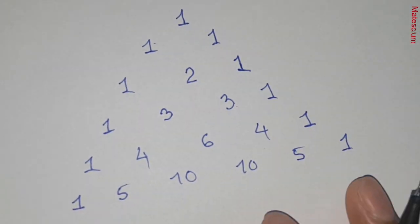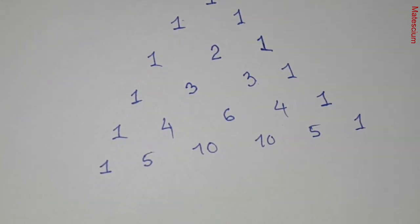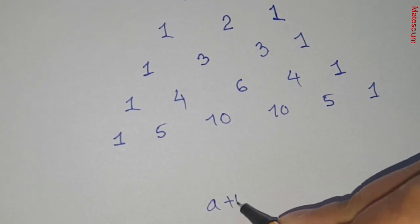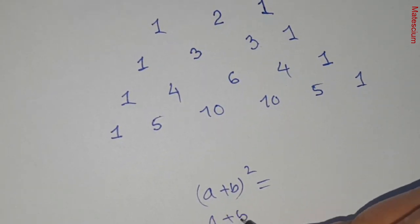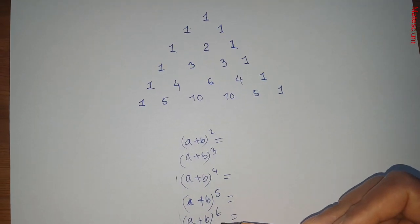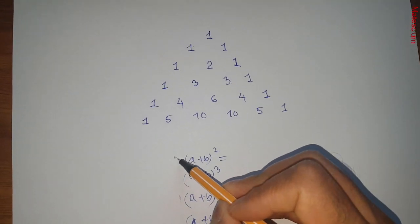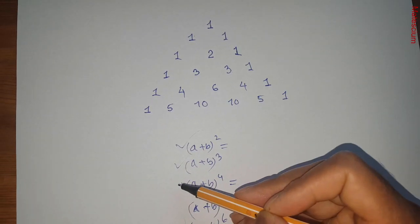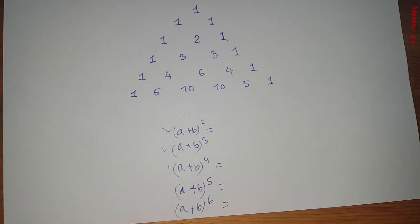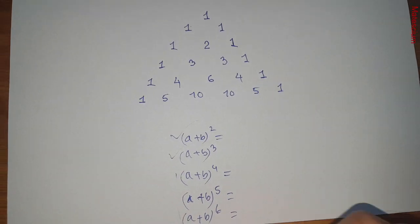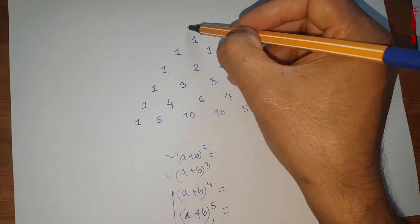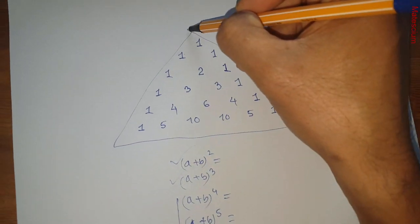Question is, what's the application of this Pascal Triangle, right? We know there are different formulas. Let's say a plus b whole square. It is quite difficult to remember all those formulas, right? Maximum, we can remember these ones and that one, but rest of them. For example, a plus b to the power seven or a plus b to the power eight, it's quite difficult to remember. So what is the way to find out all those formulas? Always use this Pascal formula or Pascal Triangle.